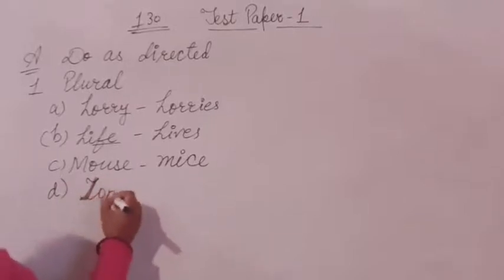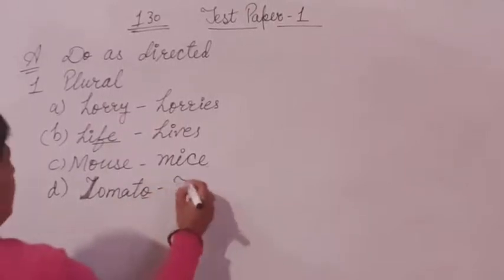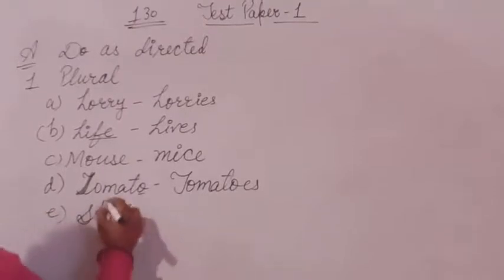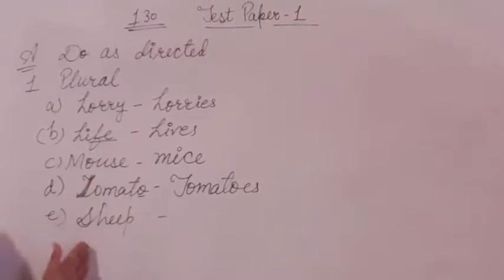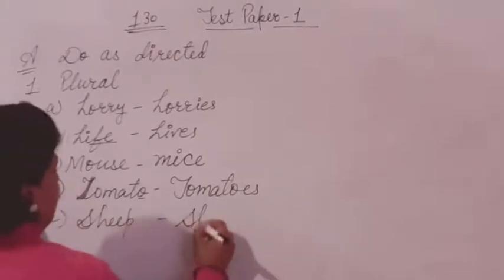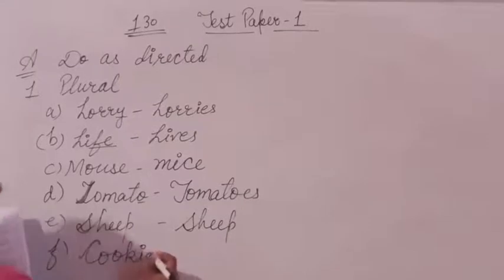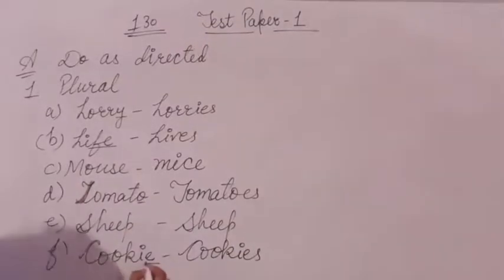Next is 'tomato.' Here, the word ends in 'o,' so we put 'es' to make it plural. Tomato becomes tomatoes. Next is 'sheep.' This is an irregular noun — it cannot be changed. It remains the same in singular and plural, so we write 'sheep' again. Next is 'cookie.' We can make it plural with the help of 's.' It becomes 'cookies' — we put 's' after it because 'e' is already there.